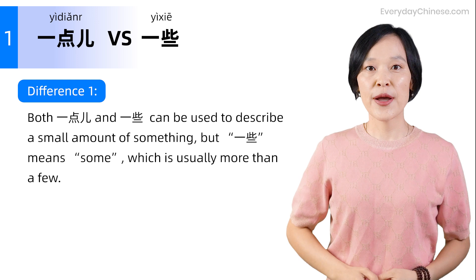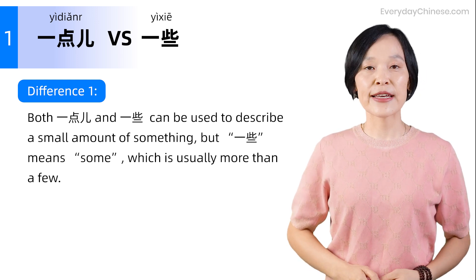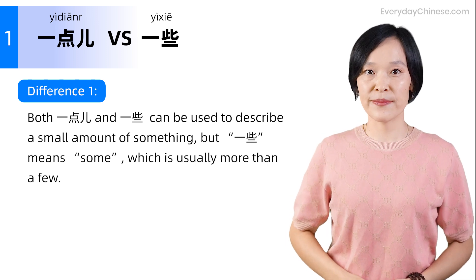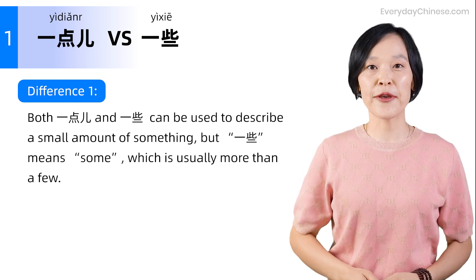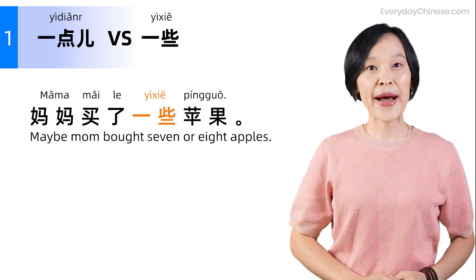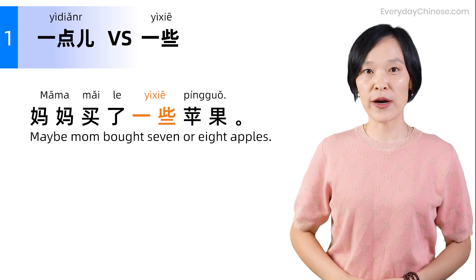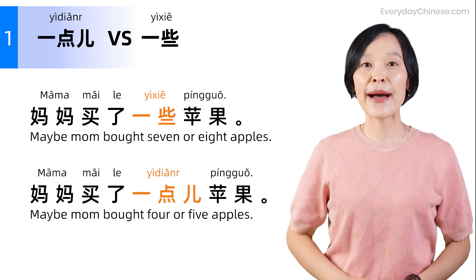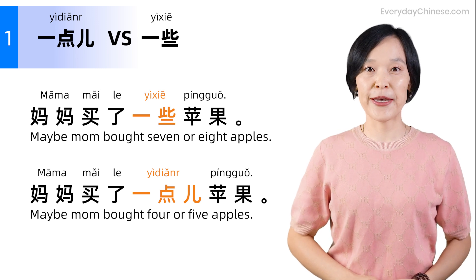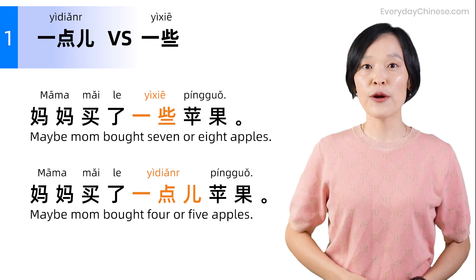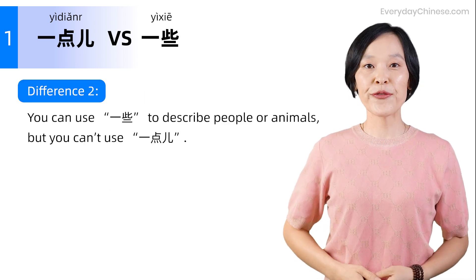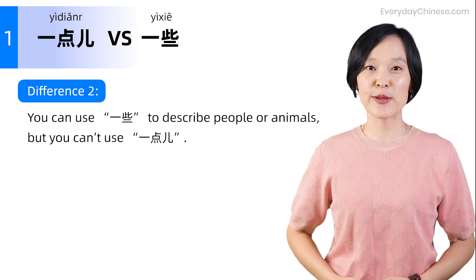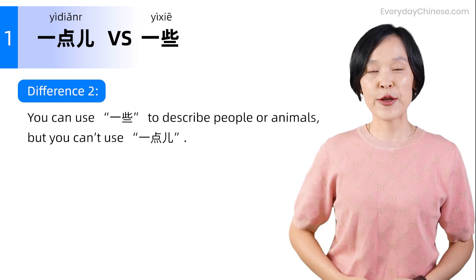Difference one: Both 一点 and 一些 can be used to describe a small amount of something. But 一些 means 'some,' which is usually more than a few. For example, 妈妈买了一些苹果 — maybe mom bought seven or eight apples. 妈妈买了一点苹果 — maybe mom bought four or five apples.